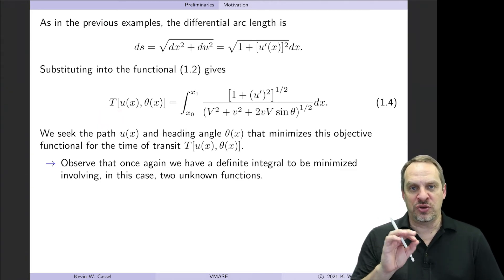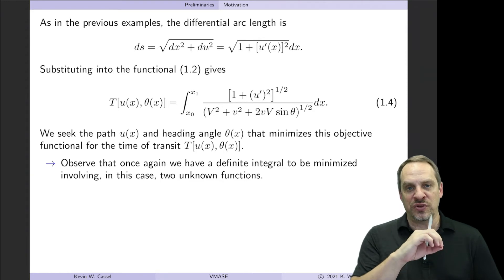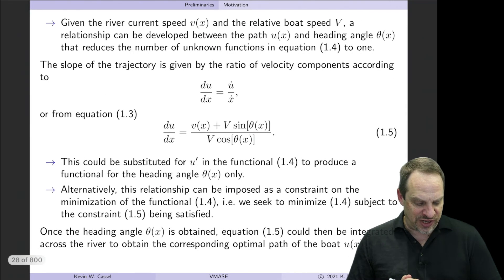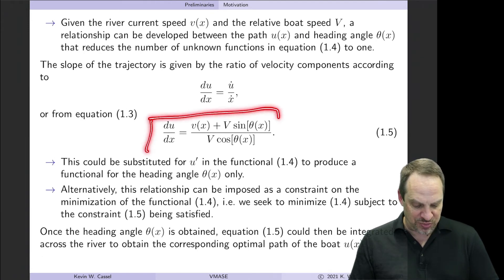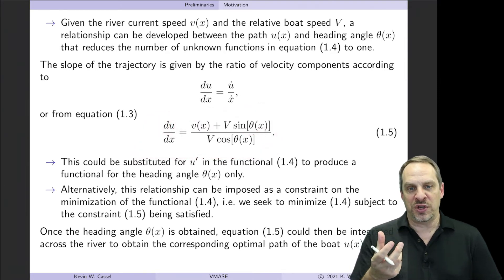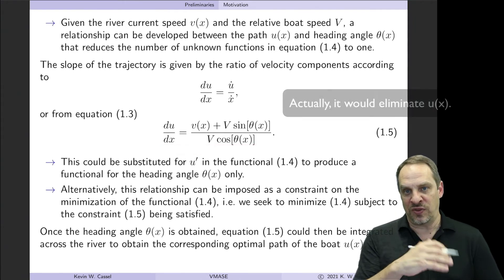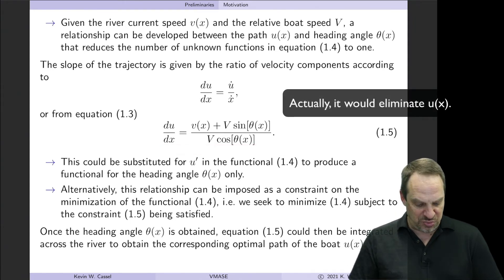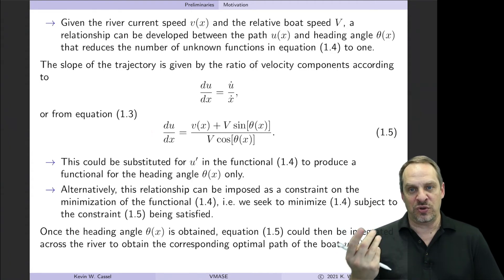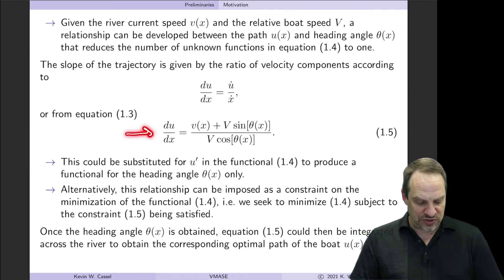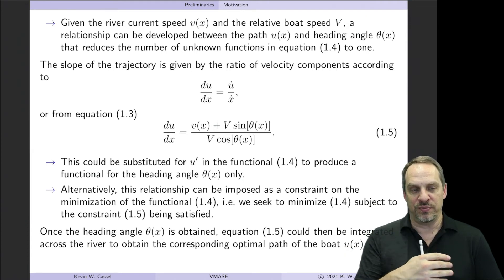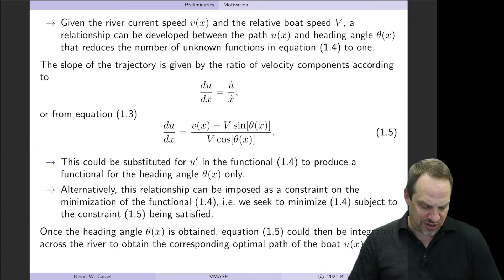Now it turns out, as I alluded to before, that U and theta are not completely independent, and this makes sense intuitively. If I know the heading angle and velocities of the river and so forth, then I can extract out the path as well. So it turns out they are related, and I won't get into the details, but you can write down a relationship between the path U as well as the heading angle theta. So really, you only have one unknown dependent variable as these two things are related. You could either take this expression and substitute it in to eliminate the theta, for example, the heading angle. Or you could actually impose this as a constraint, so you could have your functional with U and theta, so two dependent variables. With this, this is known as a differential constraint that relates those two quantities, U and theta, together, recognizing the fact that they're not completely independent of one another. So either way could be done, and we'll talk about how to do that later in Chapter 2.